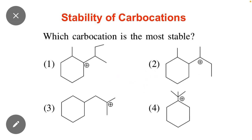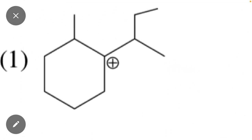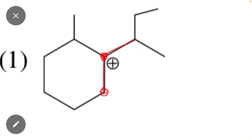So first of all, what is alpha hydrogen? Alpha hydrogen refers to the hydrogens on the carbon directly attached to the positive charge carbon. For example, this carbon contains a positive charge, and directly attached to it are this carbon, this carbon, and this carbon.